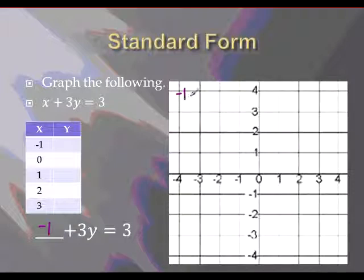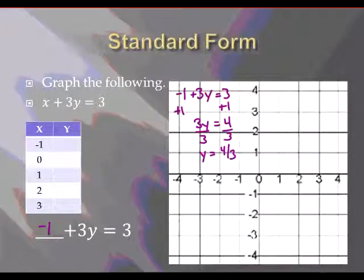Let's rewrite it over the graph here so I have some more room. Negative 1 plus 3y is equal to 3. All we have to do now is solve for y. Add 1 to both sides. 3y is equal to 4. Divide both sides by 3. y is equal to 4 thirds, which is 1 and 1 third. So we'll plug that in and plot our point. There it is, 4 thirds. And your point, negative 1 and 4 thirds.